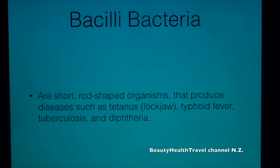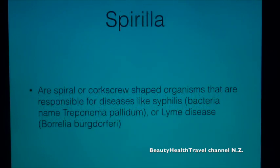Bacilli bacteria are short, rod-shaped organisms that produce diseases such as tetanus, lactose, typhoid fever, tuberculosis, and diphtheria. Spirilla are spiral or corkscrew-shaped organisms responsible for diseases like syphilis — bacteria named Treponema pallidum — or Lyme disease, Borrelia burgdorferi.